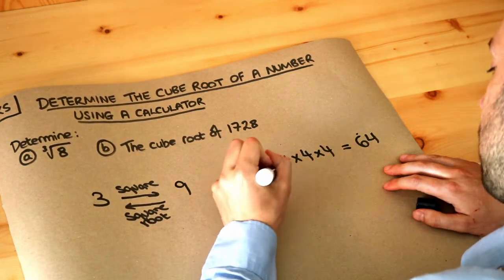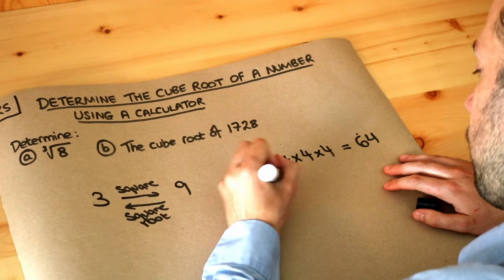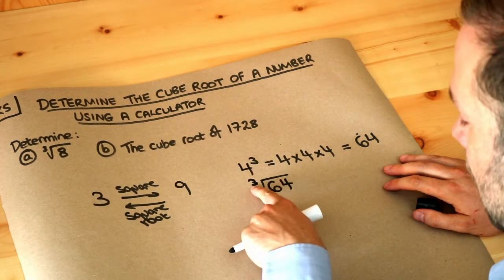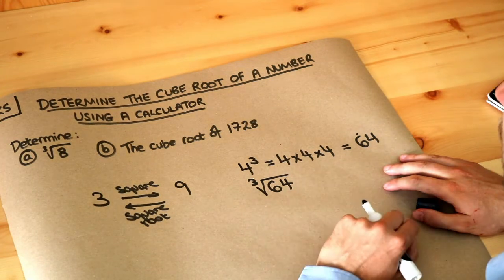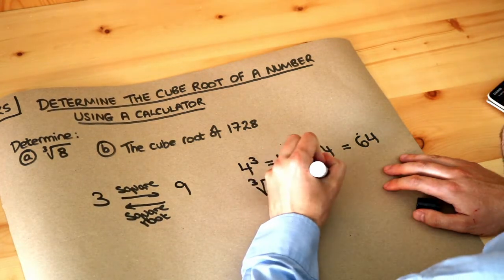So if I wrote it like this, the cube root of 64 with a little mini 3 here, that says what number cubed gave you 64? Well, it's 4 because 4 cubed is 64.